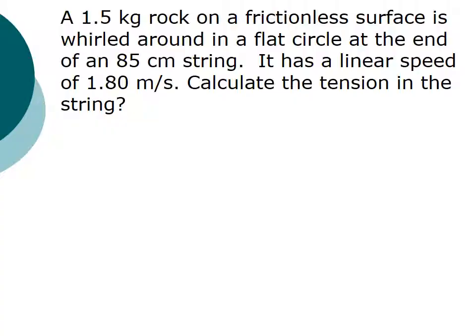Okay, here's a simplistic problem where a 1.5 kilogram rock is on a frictionless horizontal surface and is whirled around on a flat circle. It's being whirled around on a string of 85 centimeters in length and the linear speed of the rock is 1.8 meters per second. The goal is to calculate the tension in the string.